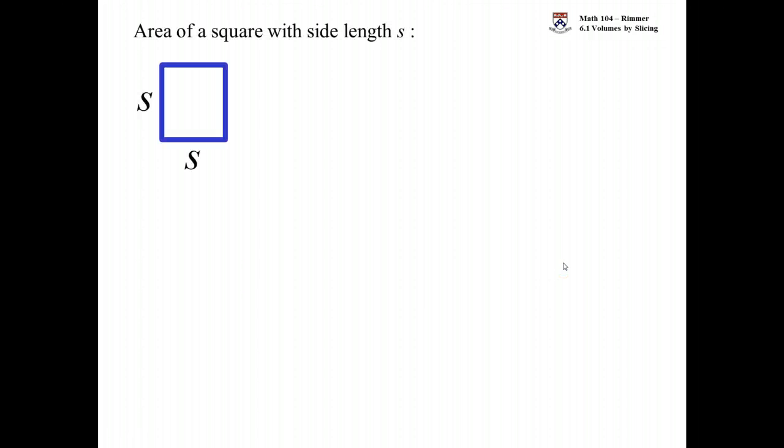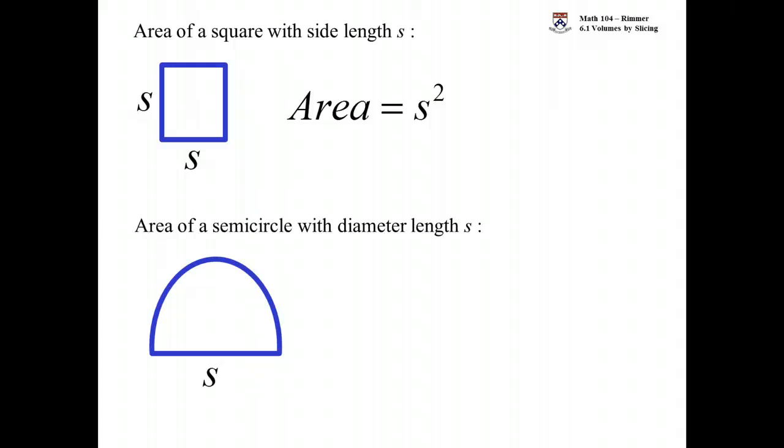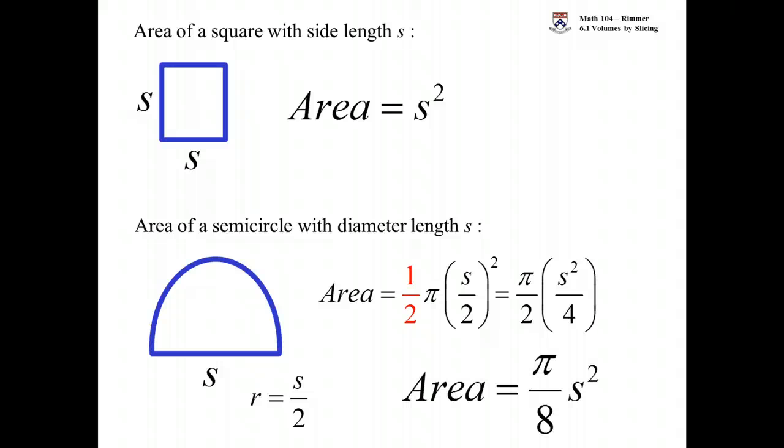So first up is a square, and that's just going to be S squared for the area. Next up is a semicircle where the diameter is S. To get the area of such a shape, we're going to need a radius, and so the radius is half of the diameter. But this isn't a full circle, this is only half of a circle. And so the area is going to be half of pi R squared. And we've taken square the S and square the 2, and we'll have pi over 2 times S squared over 4. Altogether, we can simplify it by saying that it's pi over 8 times S squared.